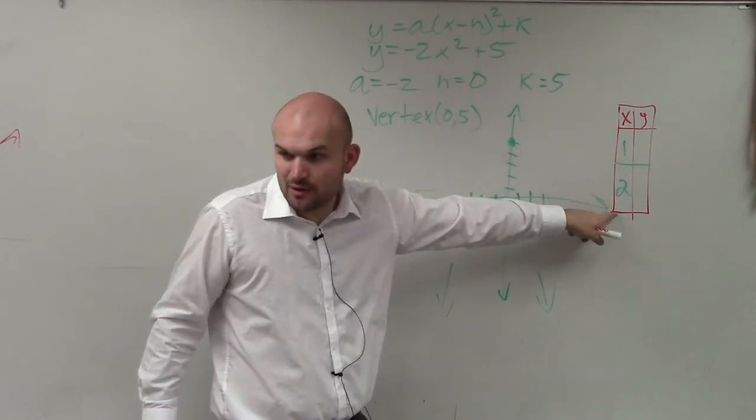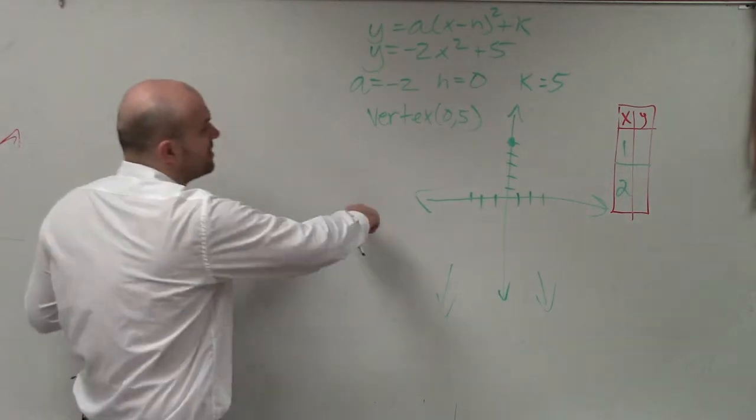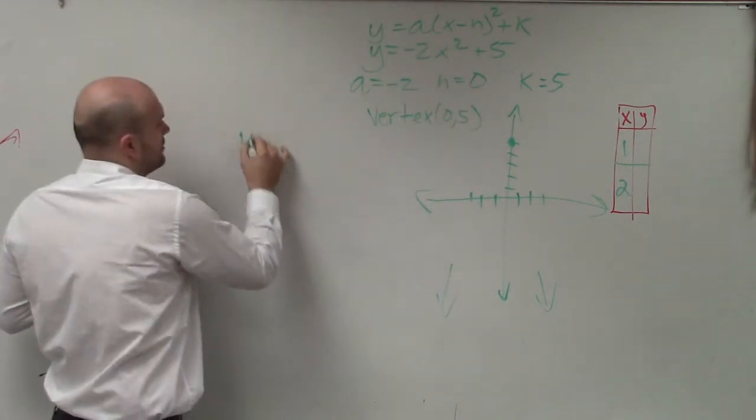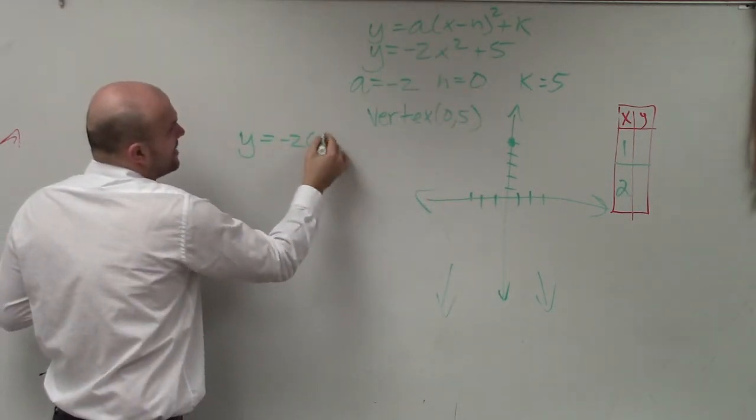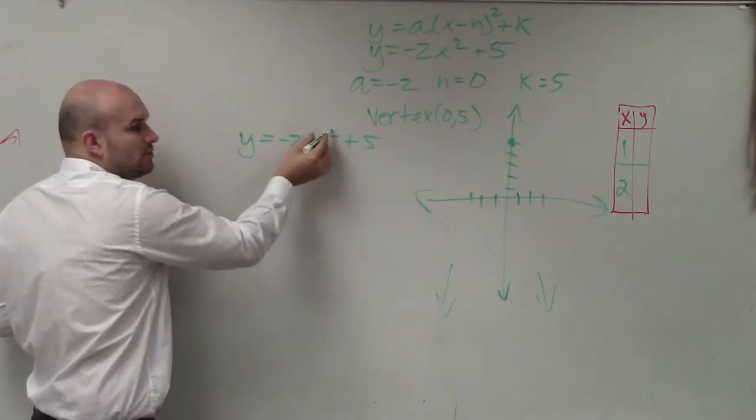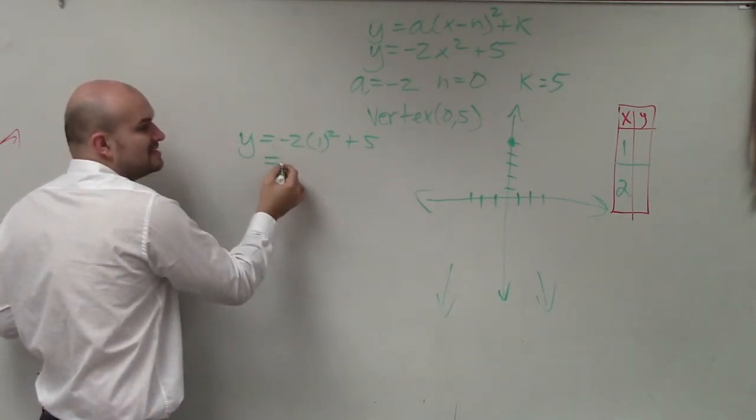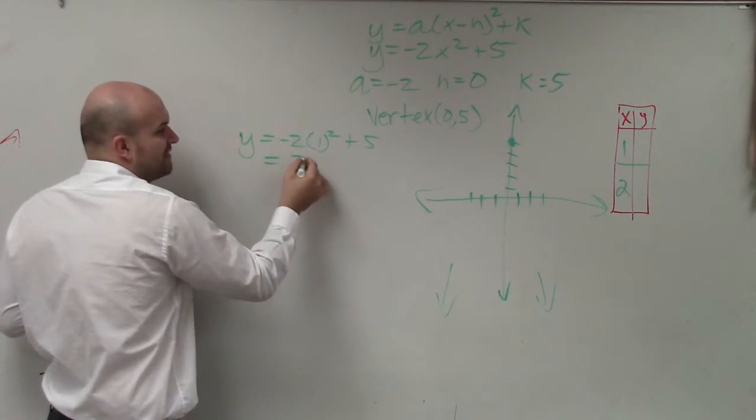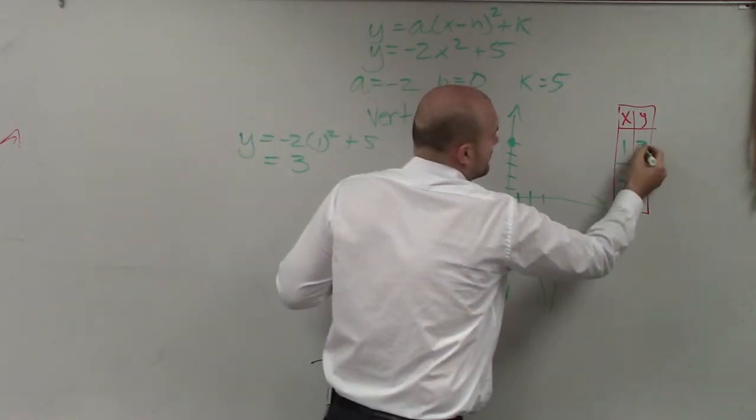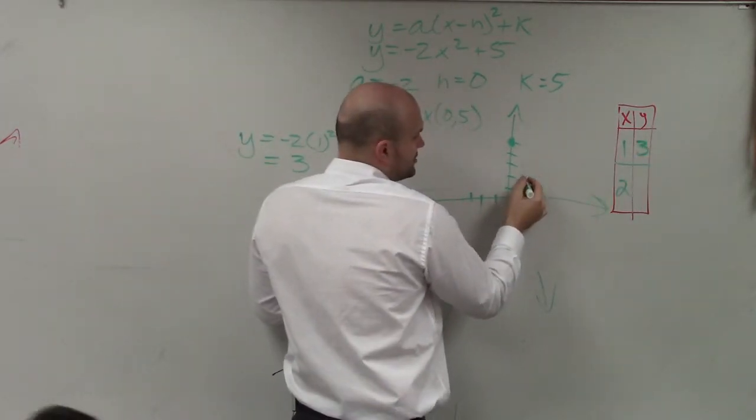Now we need to figure out what those points are. So we plug them into the equation. Y equals negative 2 times 1 squared plus 5. 1 squared is 1. 1 times negative 2 is negative 2. Negative 2 plus 5 is 3. So I go over 1, up 3. 1, 2, 3.